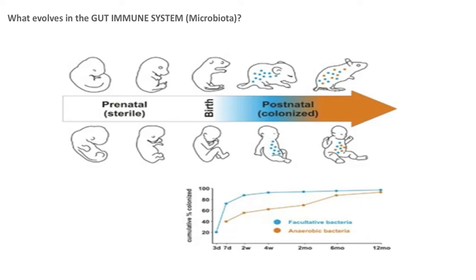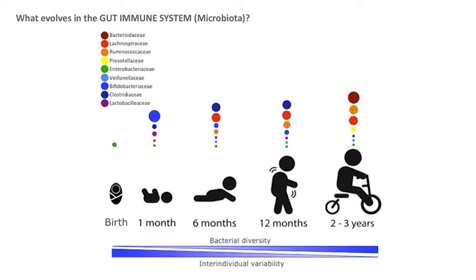Some enterprising OBGYNs who know about this put a gauze on the mother's vagina, do the cesarean section, and put the gauze over the baby's face so there would be an inoculation of the bacteria that was supposed to be there. Because what did they find when analyzing these children's bacteria? They find the skin bacteria of the people who handled them first.